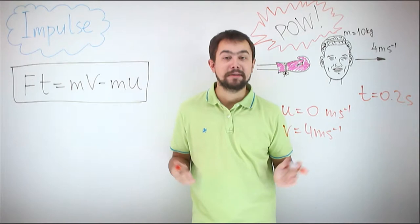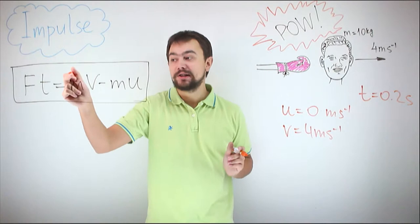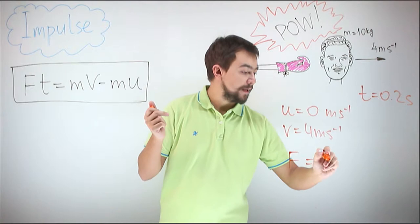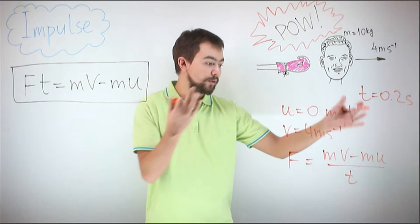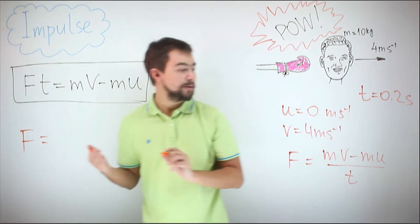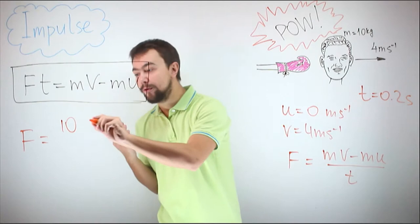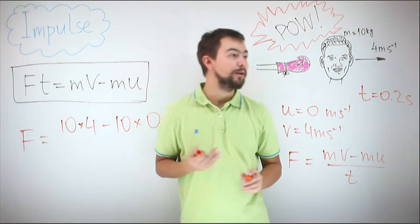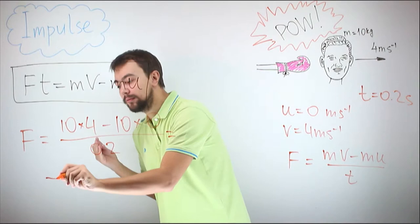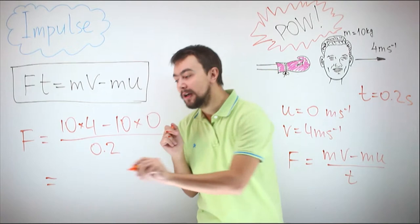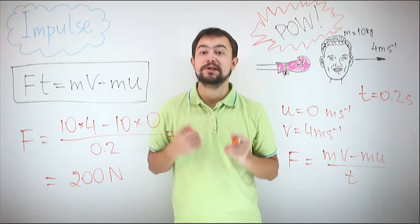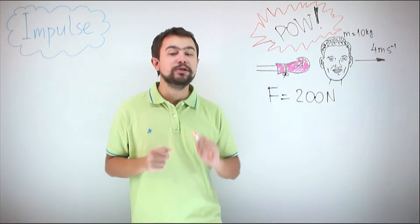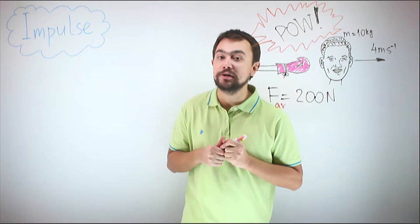Let's calculate the force. From this equation, if we divide by T, force is equal to Mv minus Mu divided by T. Plugging in: force is equal to 10 multiplied by final velocity 4, minus 10 times 0, which is 0, divided by 0.2. That's 10 times 4 is 40, divided by 0.2, which is 200 Newtons. So the force of the punch is 200 Newtons. When we say the force is 200 Newtons, we actually mean the average force of the punch is 200 Newtons.